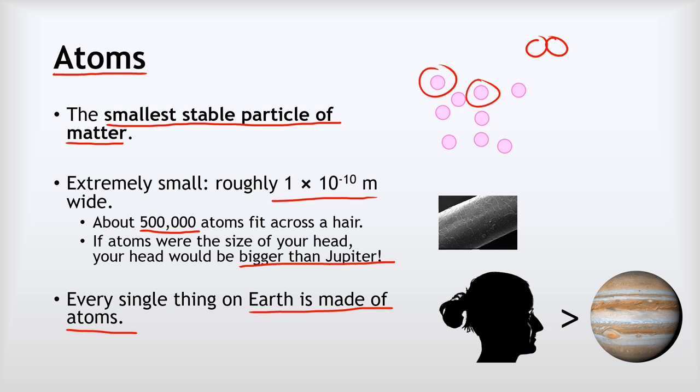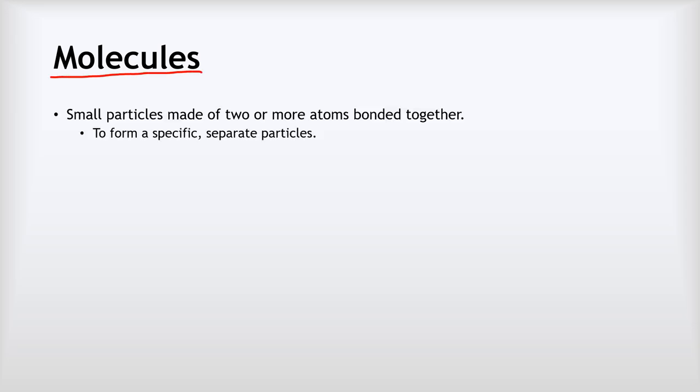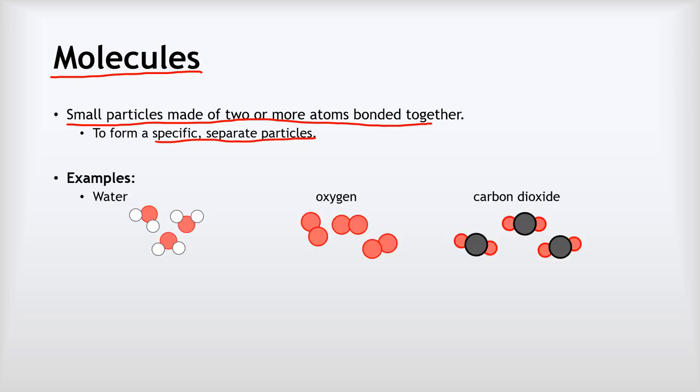Okay, so the next question is what happens when we join atoms together? And the answer is we get something called molecules. So what are these molecules? Molecules are small particles made of two or more atoms bonded together. And this forms specific, separate particles. So let's have a look at some examples of atoms and molecules.